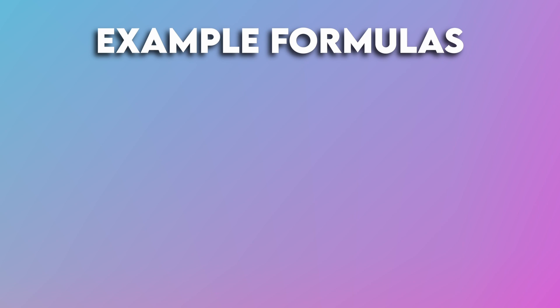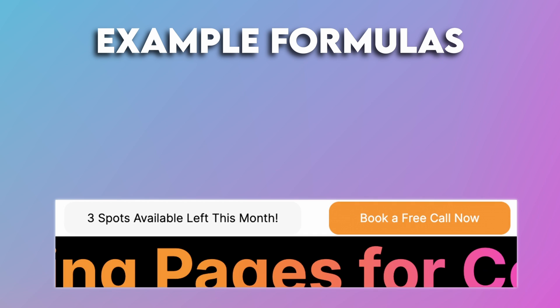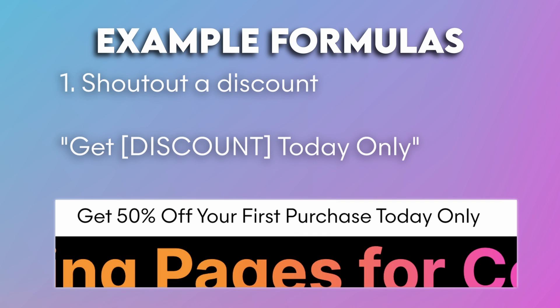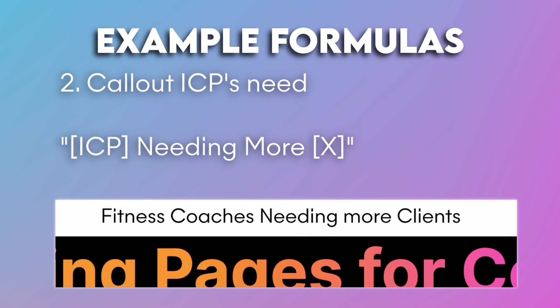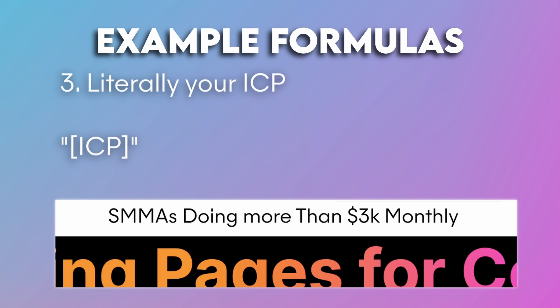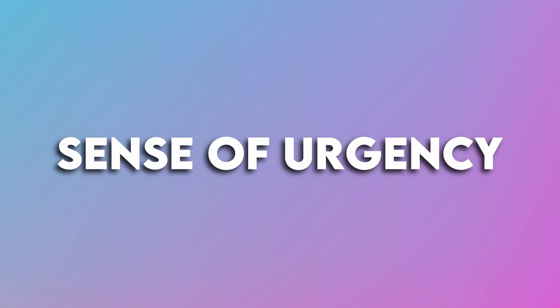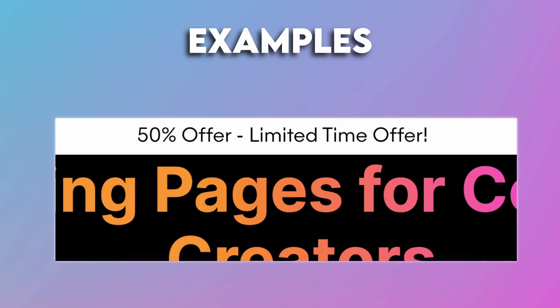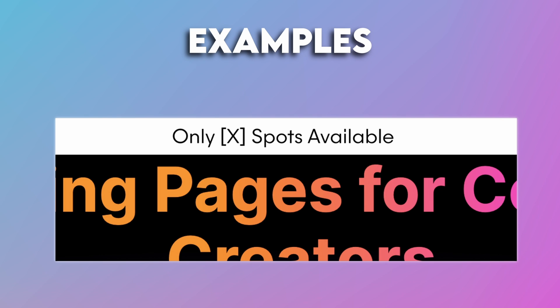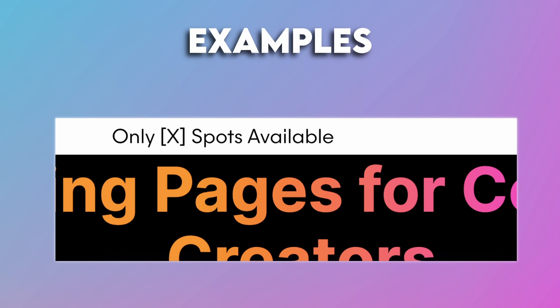Here are some example formulas you could use for your landing page banner: maybe shouting out a discount, calling out your ICP's need, or literally calling out your ICP directly. The second way you could use your banner is by creating a sense of urgency to encourage immediate action. You could use phrases like 'limited time offer,' 'only X spots available,' or increase the urgency by adding a time frame, like 'X spots available for this month.'